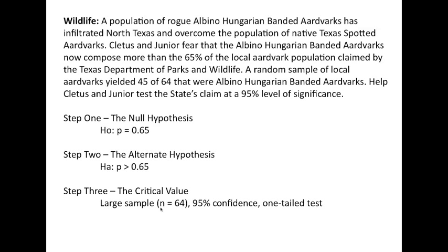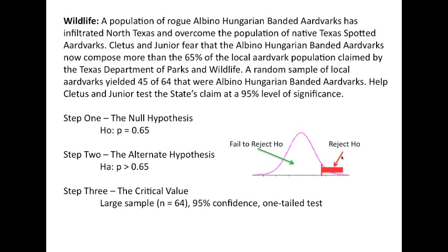We need to find our critical value. We have a large sample because N is 64, a 95% level, and it's a one-tail test based upon p is greater than. We construct a picture: mu-P has a Z score of zero, with the fail-to-reject H0 region on the left and the reject H0 region on the right. Our Z critical value is 1.645, which allows 95% to the left and 5% to the right.